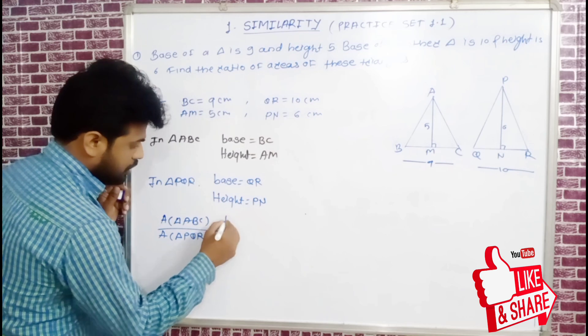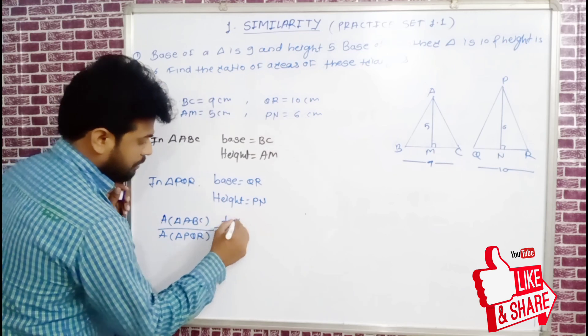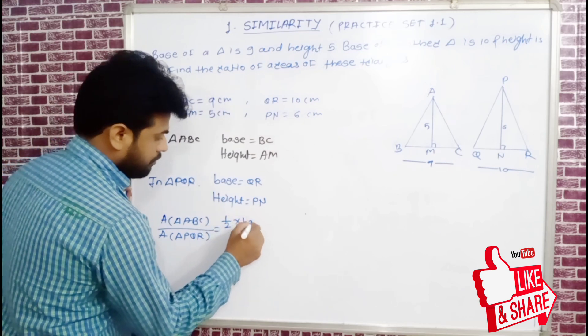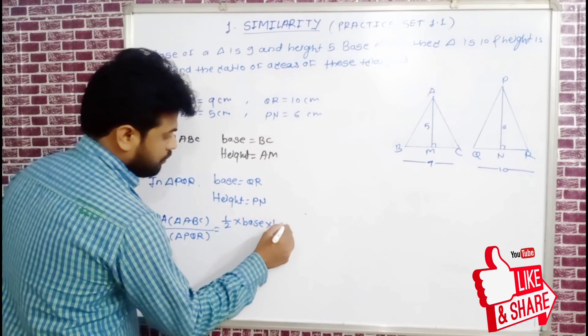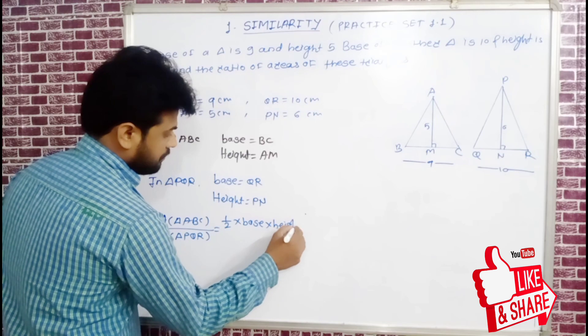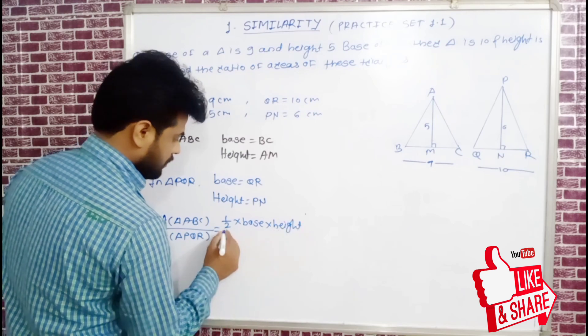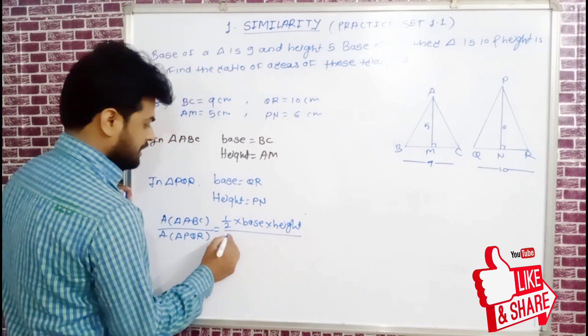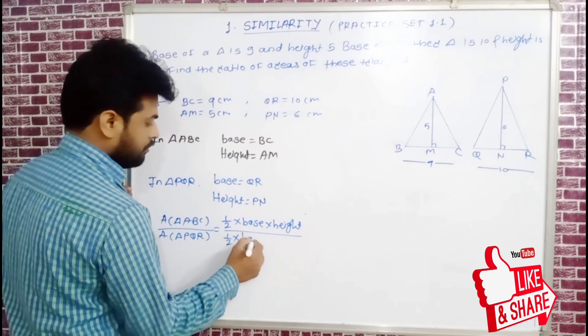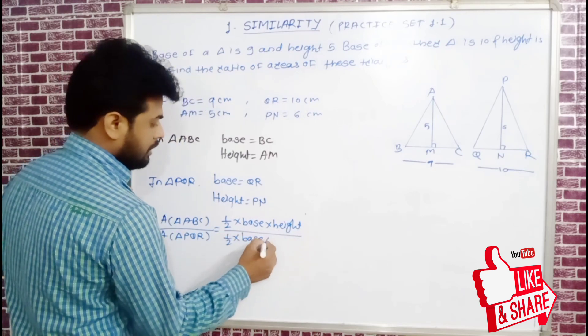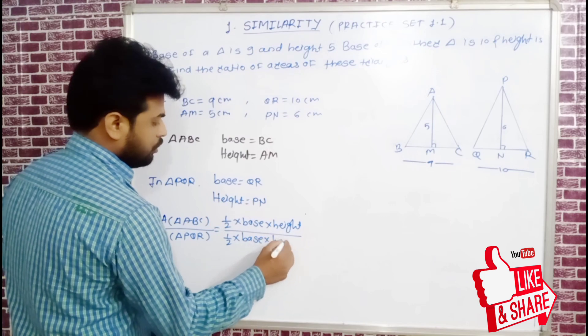The formula for area of a triangle is ½ × base × height. For the first triangle, area = ½ × base × height. As it is for the second triangle, area = ½ × base × height.